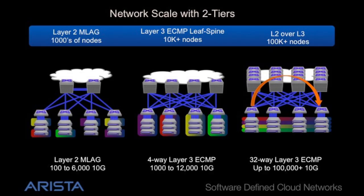Arista cloud networking scales from 100 servers to 100,000 servers in a two-tiered design. With MLAG at layer two, you can build a two-tiered network that goes to hundreds of racks. With layer three and four-way, eight-way, 16-way, or even 32-way ECMP, you can build networks using OSPF or BGP for over 100,000 servers and one million VMs.